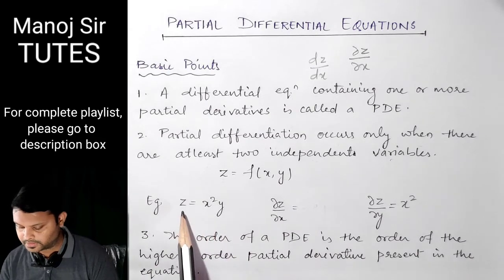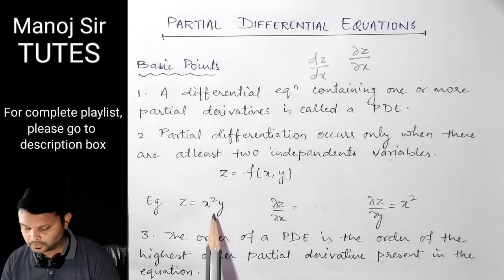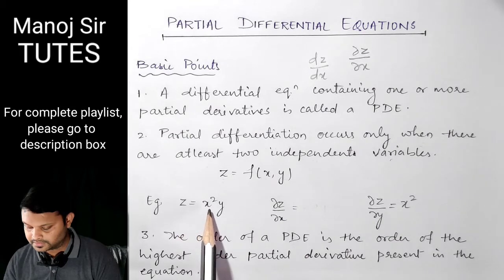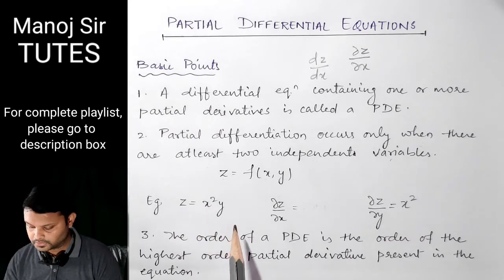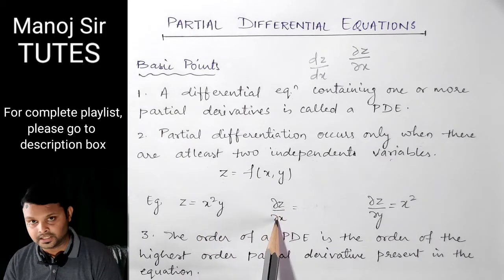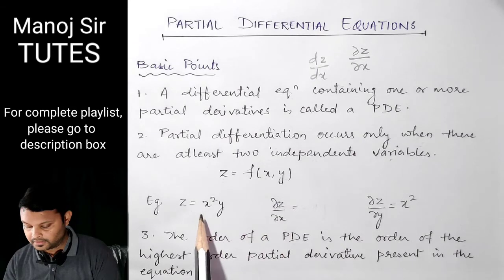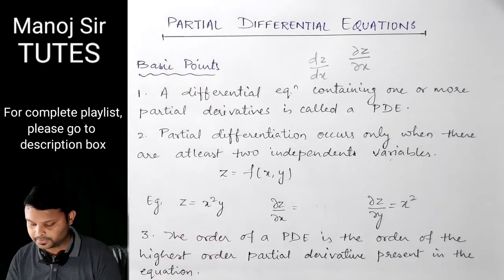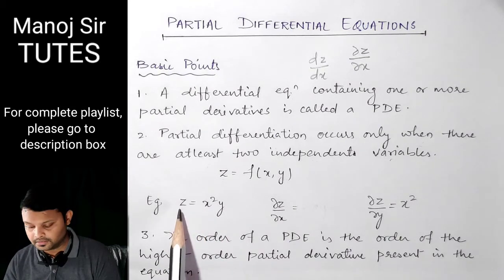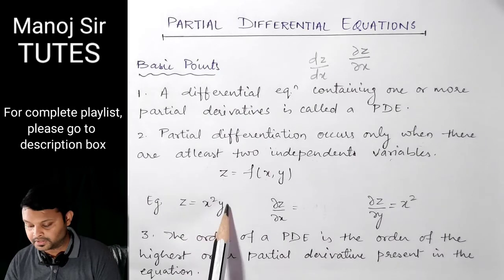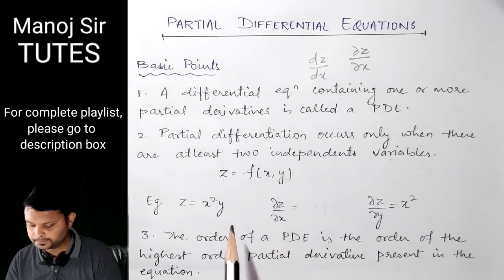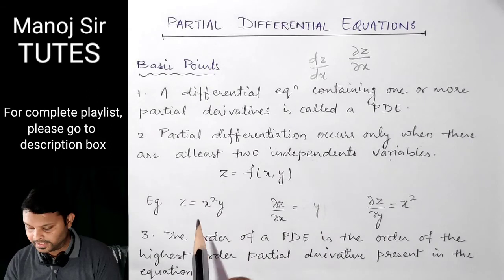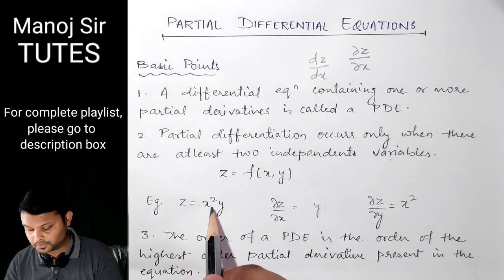Let us take one example. Suppose we have Z equals X squared into Y. If you want to find DEL Z upon DEL X, it means we are partially differentiating Z with respect to X. It means we are keeping Y as constant, so Y will remain as it is. Since we are differentiating Z with respect to X, X squared will become 2X.